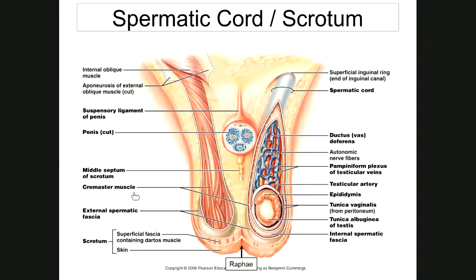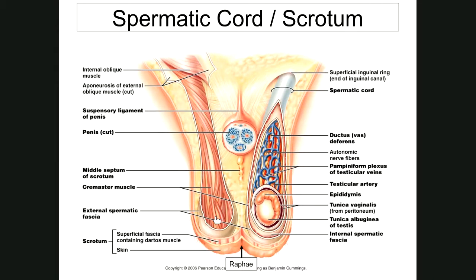The cremaster muscle is a continuation of the internal oblique muscle of the abdominal wall. It surrounds each of the spermatic cords and testicles and functions in controlling the temperature of the testes, which need to be kept approximately three degrees lower than body temperature for maximum sperm production. It does this by raising the testes during sexual arousal or exposure to cold, and lowering them away from the body when they get too warm.